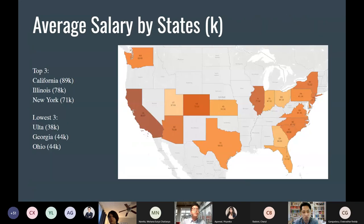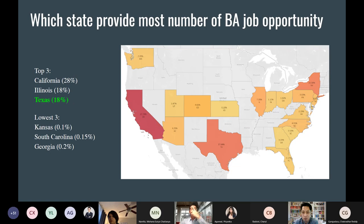Looking at average salary by state, California gives the highest pay, as most people would intuitively expect. Georgia and Ohio provide the lowest pay. The top three states for highest salary are California, Illinois, and New Jersey. For states with the most business analyst jobs, California, Illinois, and Texas lead — fortunately, we're in Texas.